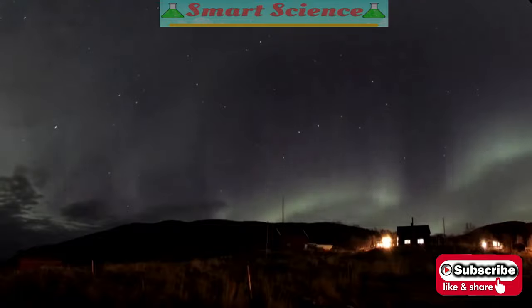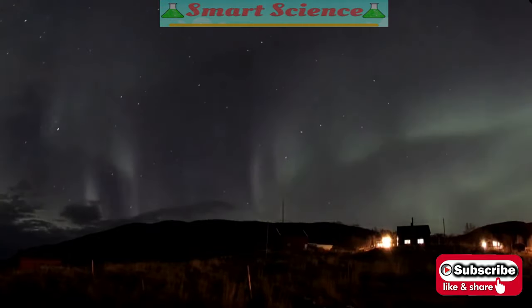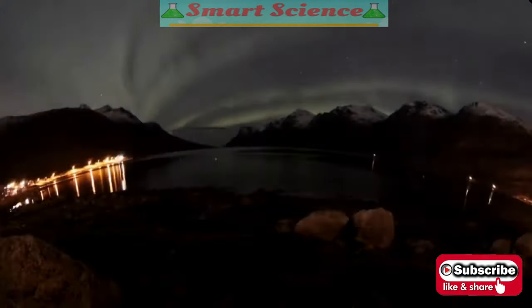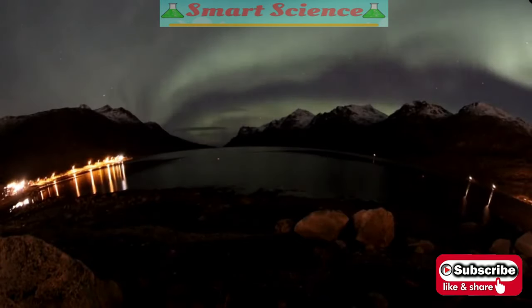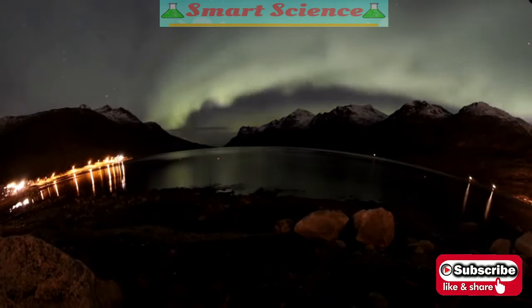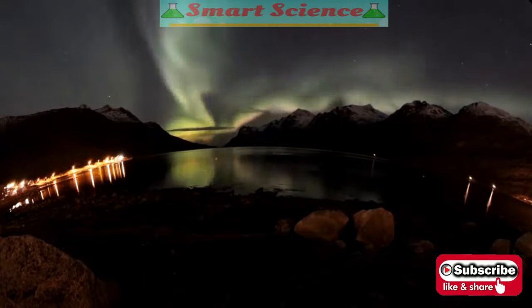Auroras can appear as long, narrow arcs extending overhead from horizon to horizon. From the side, they look like ribbons that kink, pull, and swirl.